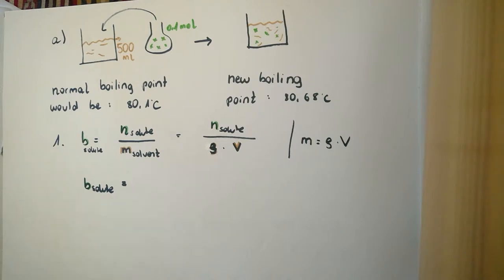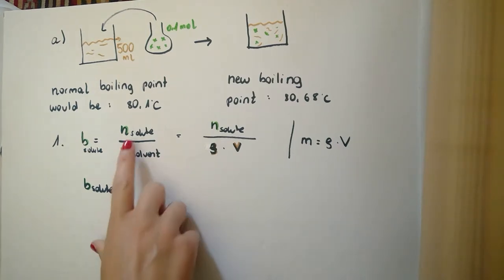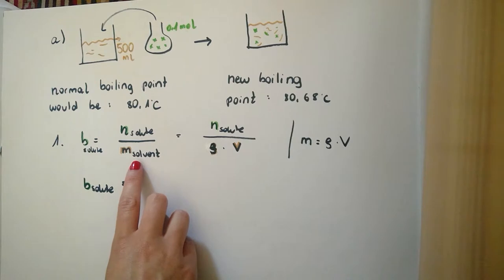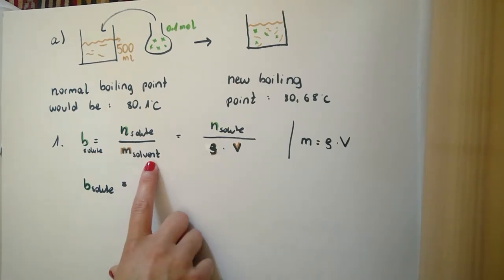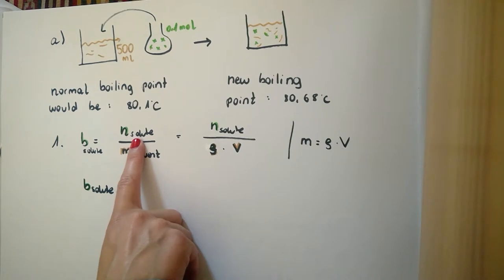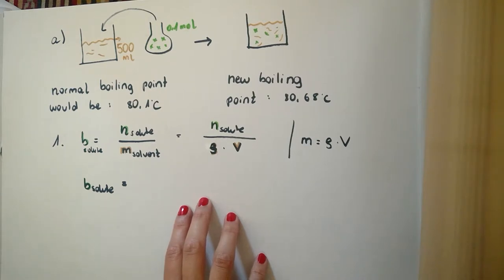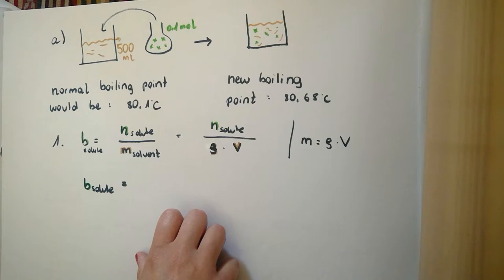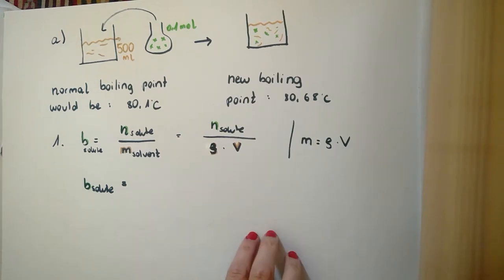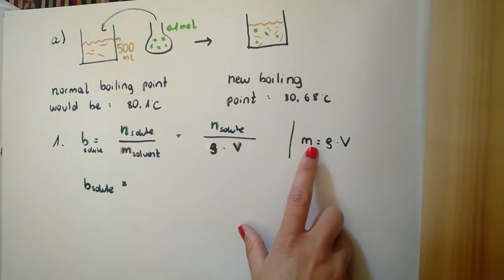We can now calculate our constant. First, we should calculate the molality. It's the amount of moles from the solute divided by the mass of the solvent. The solvent is benzene and the amount of moles are 0.1 mol. We don't know the mass of the benzene from the task, so we have to calculate it. The mass is the density multiplied with the volume.